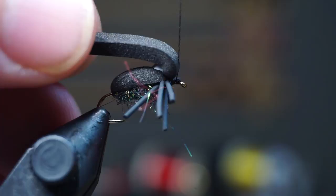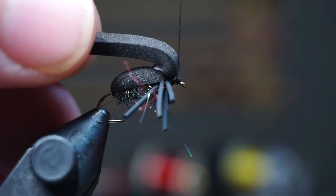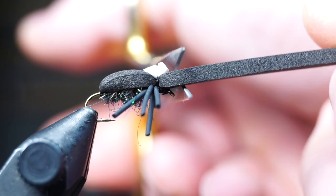And then whip finish your fly under the foam. Now I'm not sure why I didn't do this here, but it's much easier to whip finish if you pull all the foam back while completing the whip finish. Oh well, you get the idea hopefully.